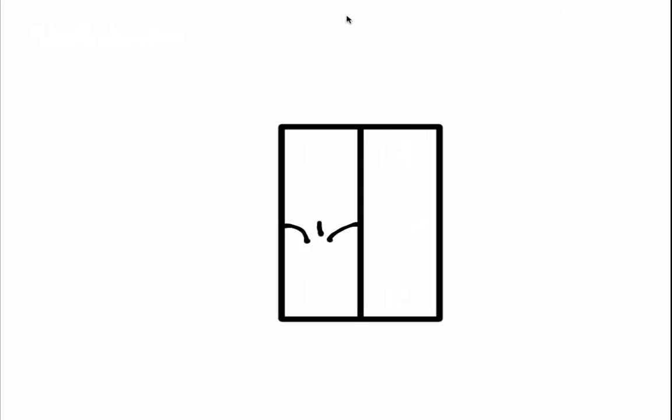In this video I'm going to cover blood flow through the heart and try to make it as simple as possible. Your heart is made of four chambers: the right atrium, the left atrium, the right ventricle, and the left ventricle.